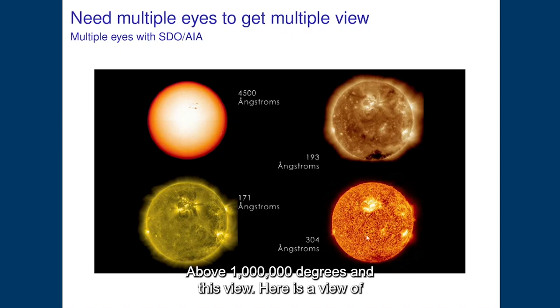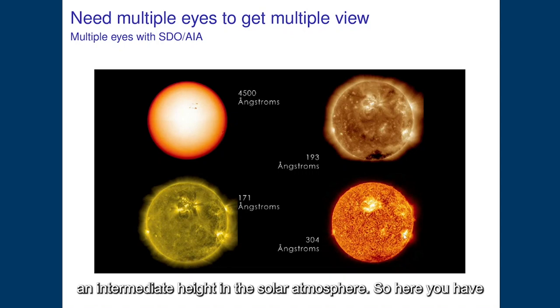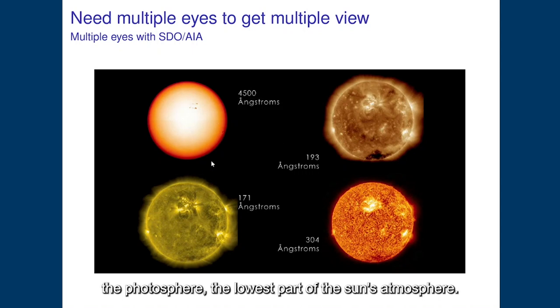And this view here is a view of an intermediate height in the solar atmosphere. So here you have the photosphere, the lowest part of the solar atmosphere. Here you have the corona, which is the highest part of the solar atmosphere. And somewhere in between you have what we call the chromosphere.